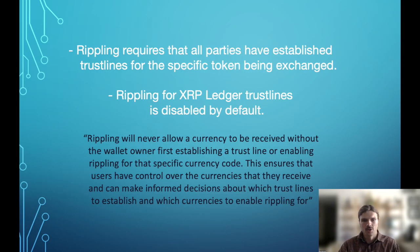It's also worth noting that the process of rippling requires that all parties have trust lines established for the specific tokens being exchanged. And as I mentioned previously, rippling for XRP ledger trust lines is disabled by default. Also, XRP will never be used to facilitate rippling.